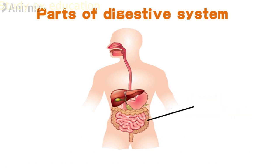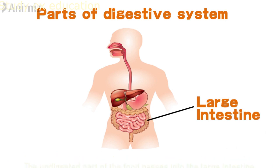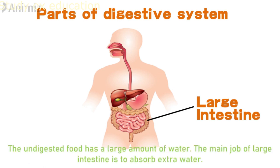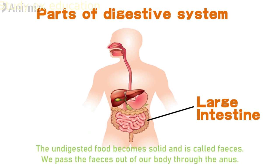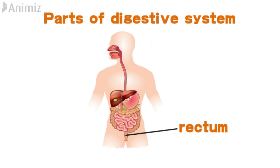Large intestine — the undigested part of the food passes into the large intestine. The undigested food has a large amount of water. The main job of the large intestine is to absorb extra water. The undigested food becomes solid and it is called faeces. We pass the faeces out of our body through the anus.